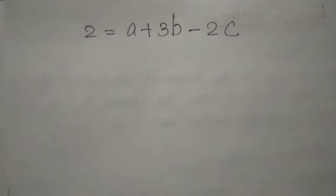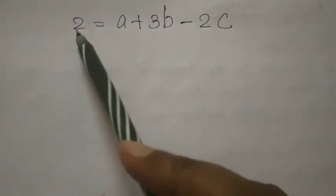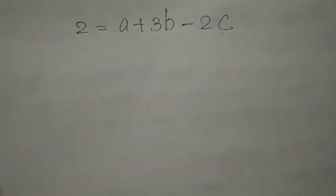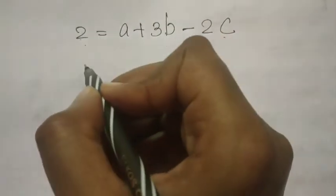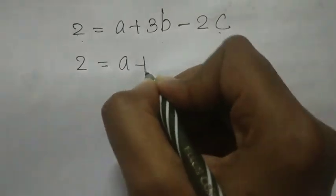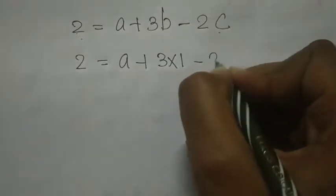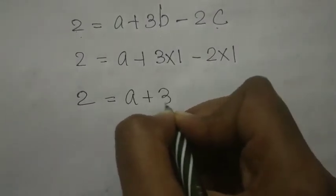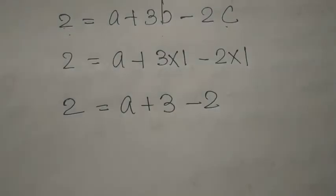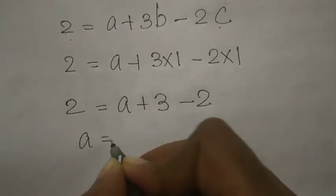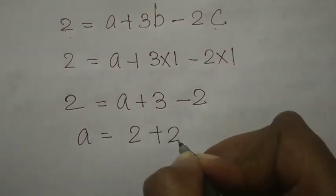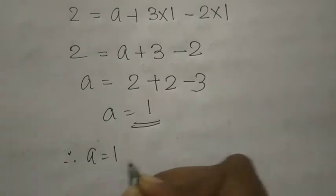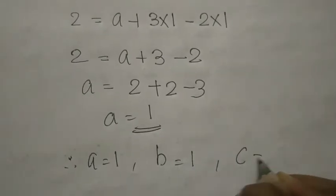Equating powers of L: 2 equals A plus 3B minus 2C. Substituting B equals 1 and C equals 1: 2 equals A plus 3 minus 2, so A equals 2 plus 2 minus 3, therefore A equals 1.